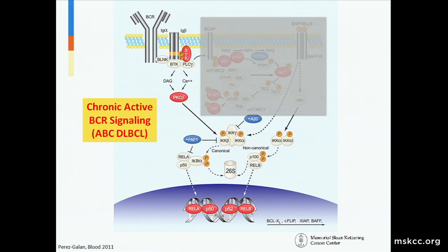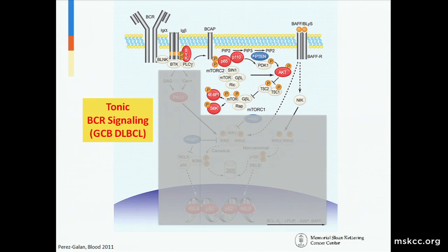Although the B-cell receptor is central to both pathways, the way it's activated and the downstream signaling seems to be different in the two different cells of origin. In the activated B-cell subtype, there seems to be what many have called chronic active B-cell receptor signaling, and this seems to rely more on the NF-κB pathway. Whereas in the GCB subtype, there's something called tonic BCR signaling that, although it goes through the B-cell receptor, more preferentially uses the PI3 kinase pathway.